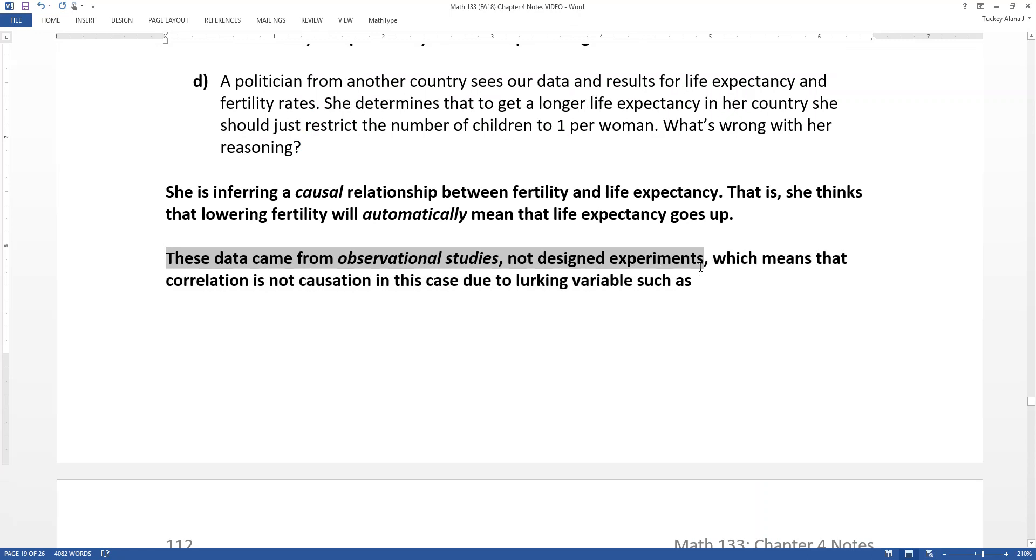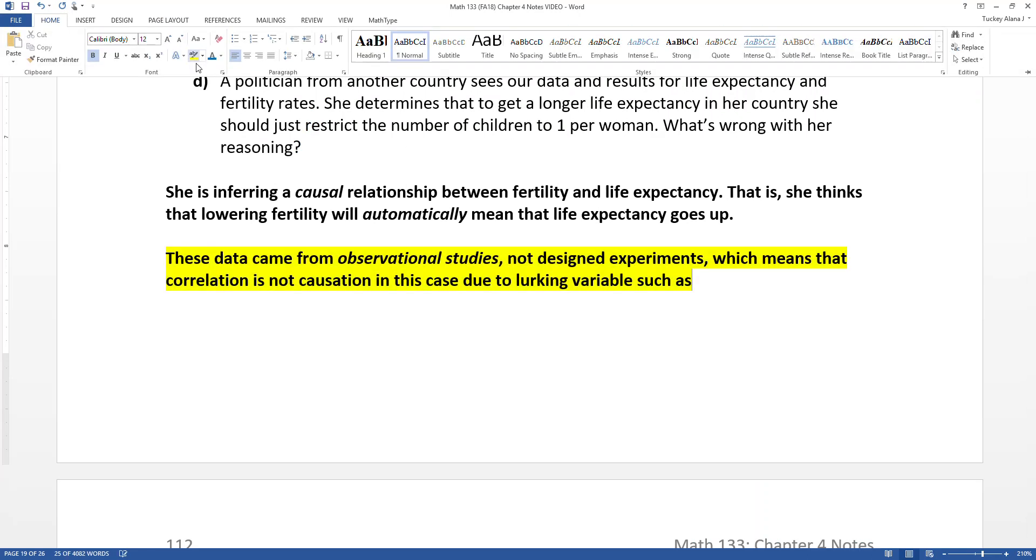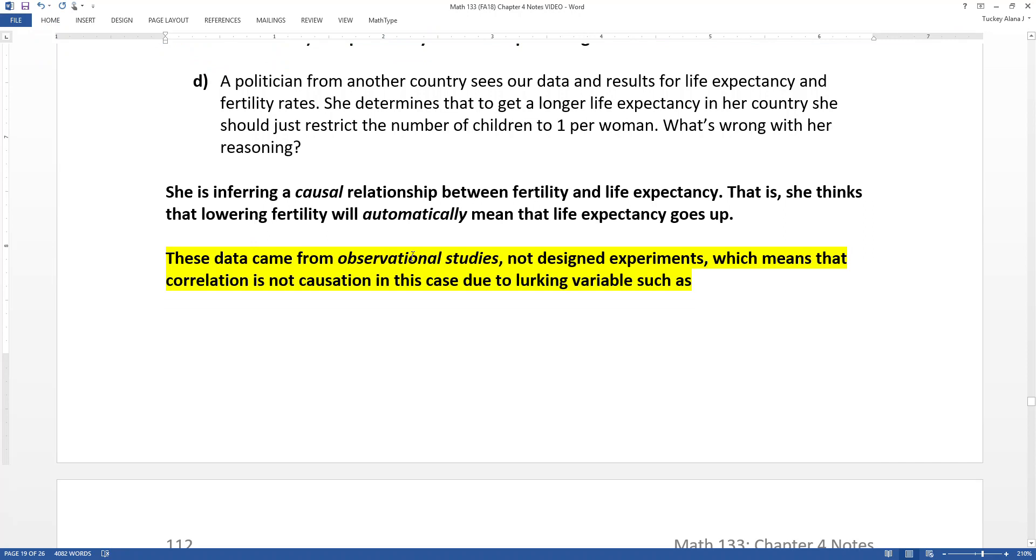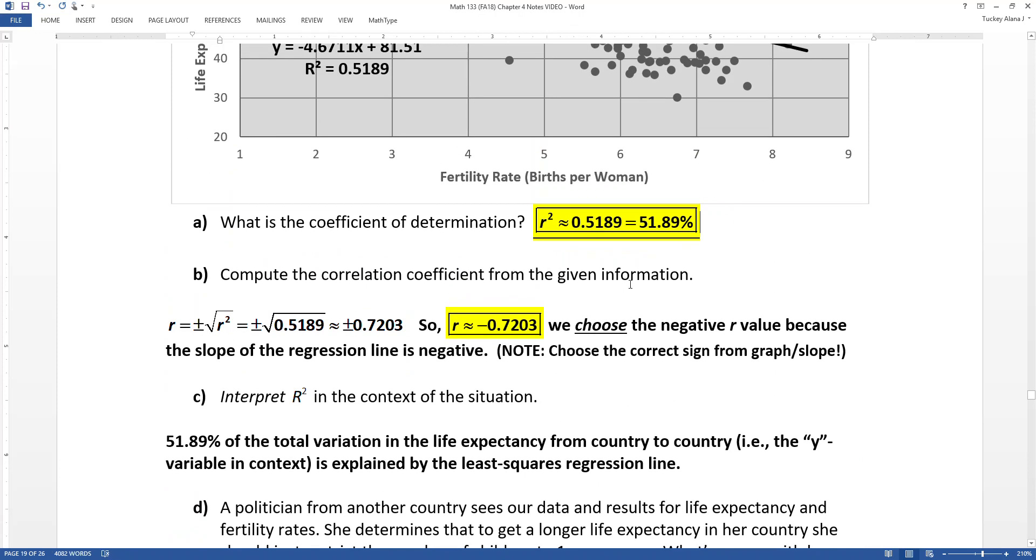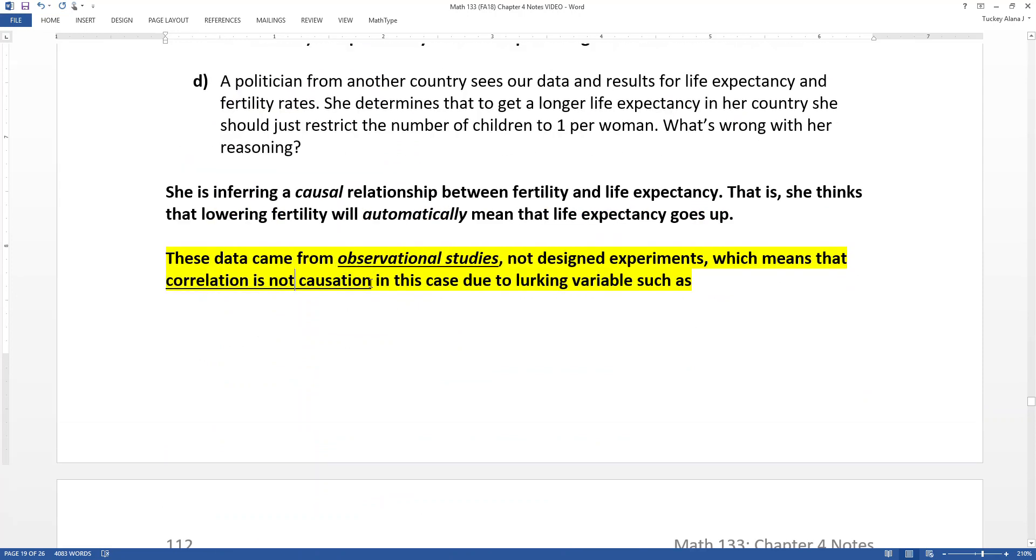All right. So this is our old classic, very important phrase to learn and know, which is that when you have observational studies, not designed experiments - remember, designed experiments imply randomization. Which we can't do. We can't randomly assign fertility rates to different countries. So if you're just looking at observational studies, then there could be other things affecting what's going on. Correlation that you find, which we found a decent correlation, by the way, this is moderate, that's a moderate negative correlation. But just finding that moderate negative correlation is not enough to prove causation. Correlation is not causation, not for observational studies.